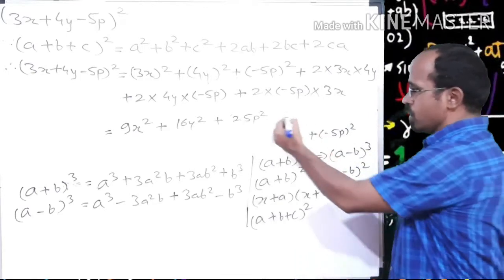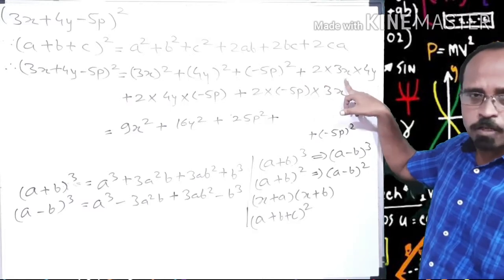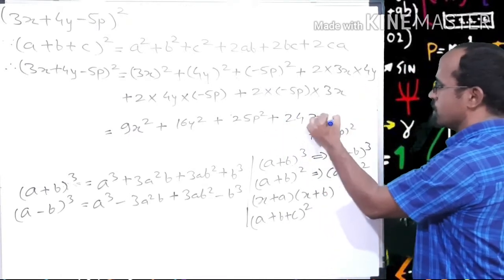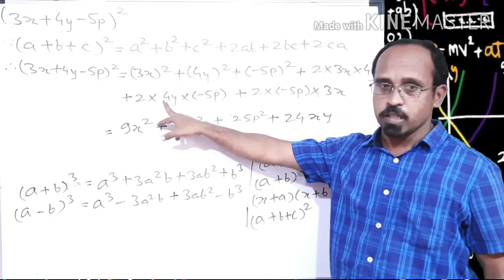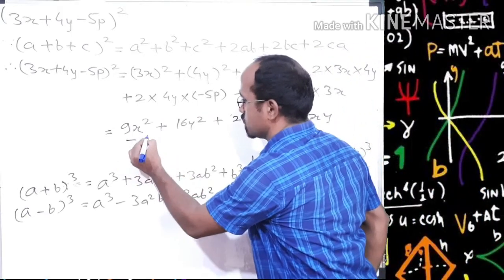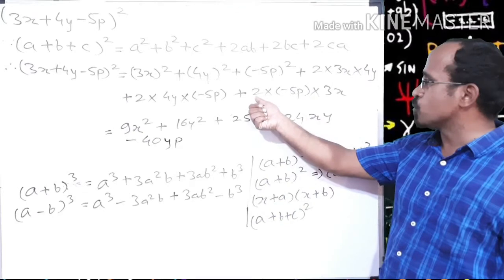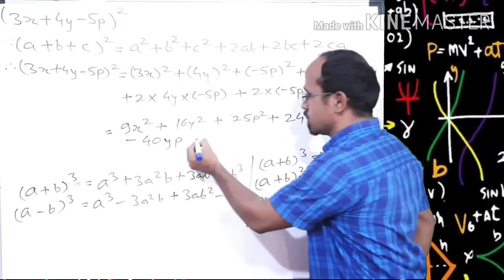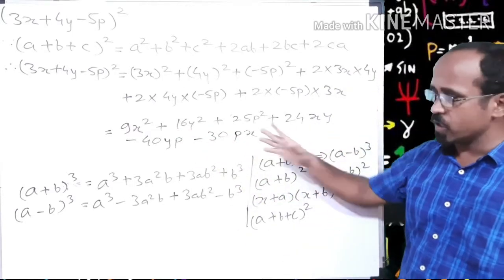For the cross terms, we can do the multiplication directly. 2 × 3 × 4 = 24, so we get +24xy. Then 2 × 4 × (−5) = −40, so we get −40yp. Finally, 2 × (−5) × 3 = −30, giving −30px. All the terms are unlike, so we cannot combine them further.